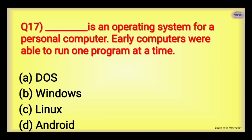Next: Dash is an operating system for a personal computer. Early computers were able to run only one program at a time — unlike Windows today which supports multitasking where many programs can run simultaneously. Options: DOS, Windows, Linux, or Android. The right answer is DOS — Disk Operating System. It is the oldest system, used in personal computers, and at that time only one program could run at a time. Linux uses a mouse and Android is for mobile.